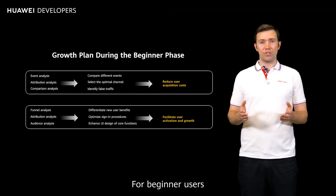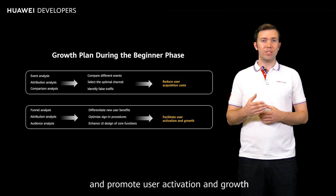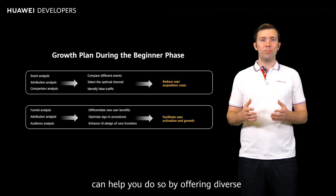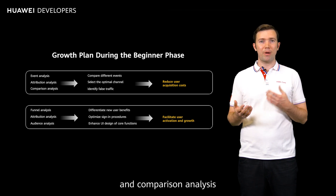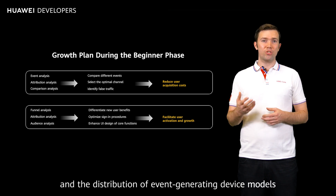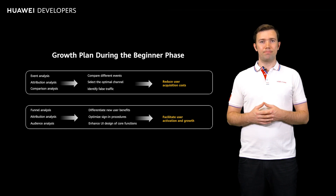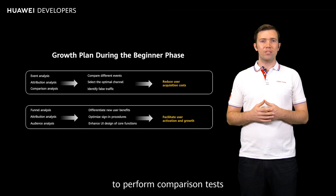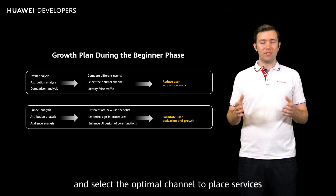For beginner users, you'll want to reduce user acquisition costs and promote user activation and growth. Huawei Analytics Kit can help you do so by offering diverse analysis capabilities, such as event analysis and comparison analysis, which allow you to view event trends and the distribution of event-generating device models and operating systems. You can then use a filter to perform comparison tests of different types of events and select the optimal channel to place services.